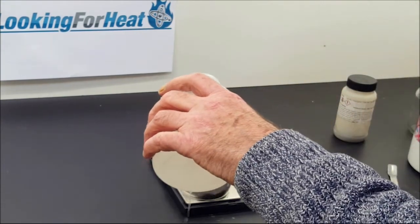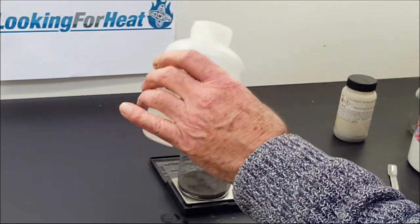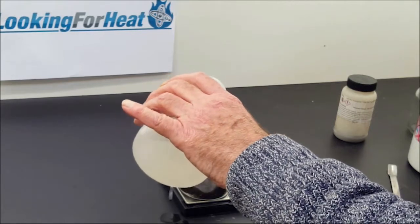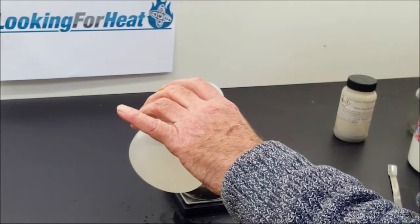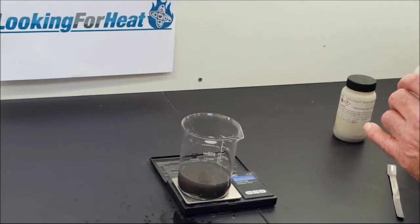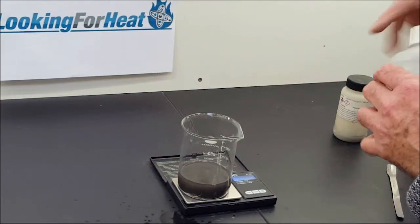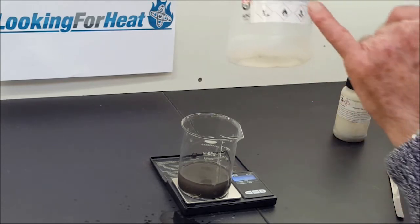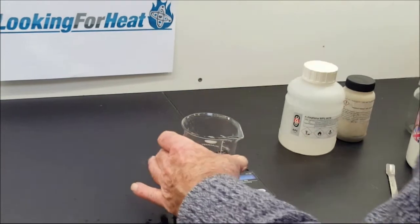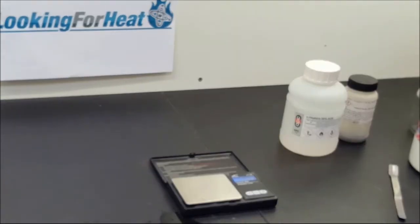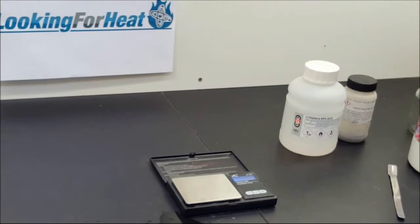Now I'm going to add 50 grams of heptane. This is 95% pure heptane. The impurities are generally speaking other alkanes. Now I'm going to put this in the sonication system.